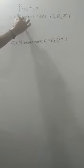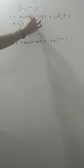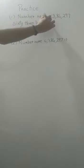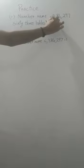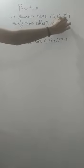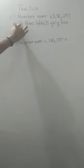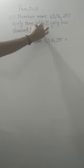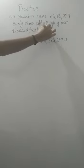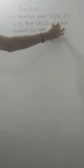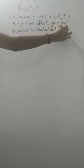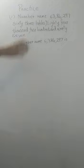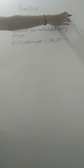63 lacs, comma. 84,000. Then put a comma again. 200 and 97. So, this is the number name. Number name of this number is this.